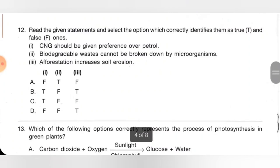Twelfth one: read the given statements and select the option which correctly identifies them as true or false. 1. CNG should be given preference over petrol — true. 2. Biodegradable waste cannot be broken down by microorganisms — false. 3. Afforestation increases soil erosion — false; it is deforestation that increases soil erosion. So the answer is: true, false, false. Option C is the correct answer.